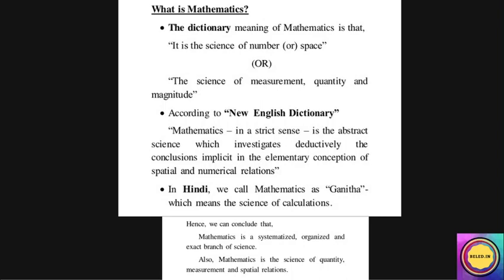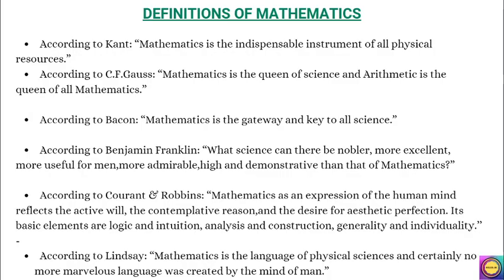In Hindi we call mathematics 'ganit' which means the science of calculation। यह तो हम सब को पता है कि mathematics से हम basic calculation करते हैं। कुछ लोग mathematics से डरते हैं क्योंकि वो calculation में weak होते हैं, लेकिन daily life में यह calculations हमारे बहुत काम आते हैं। Thus we can conclude that mathematics is a systematic, organized and exact branch of science — mathematics is the science of quantity, measurement and spatial relationships।